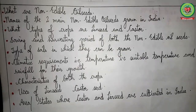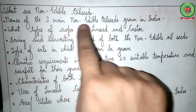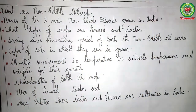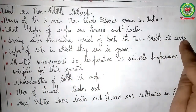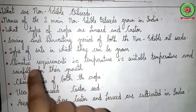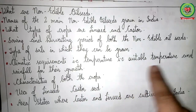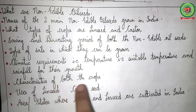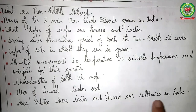So at the end, I hope children that through this video you have learnt: what are non-edible oil seeds, the names of the main non-edible oil seeds grown in India, the sowing and harvesting period of both non-edible oil seeds, the type of soils in which they can be grown, climatic requirements — that is suitable temperature for growth, characteristics of both crops, uses of linseed and castor seed, and the area and states where castor and linseed are cultivated in India. Thank you.